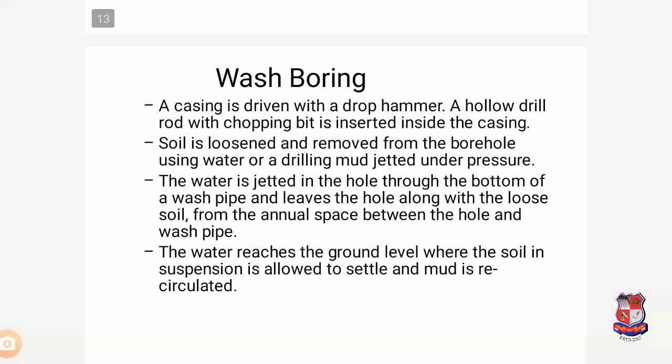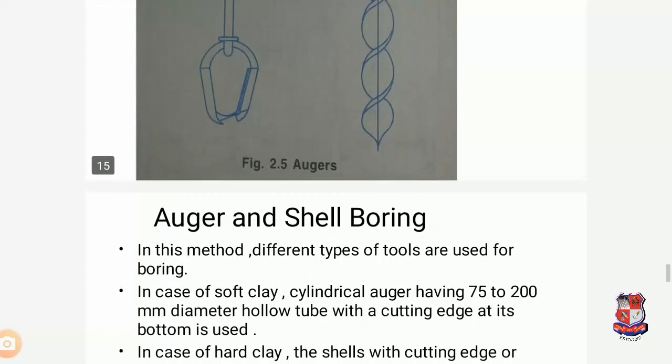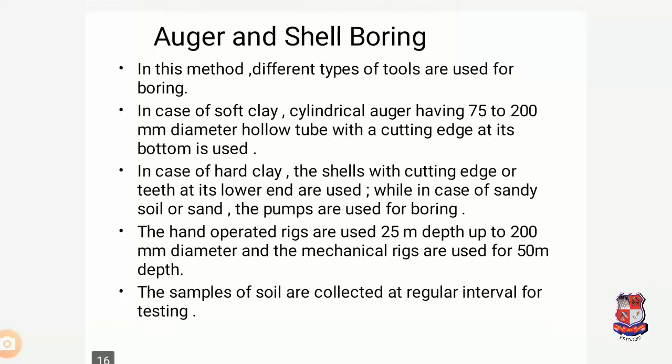In wash boring, a casing is driven with a drop hammer. A hollow drill rod with a chopping bit is inserted inside the casing. The soil is loosened and removed from the borehole using water and drill mud jetted under pressure. Water is jetted into the hole through the bottom of a wash pipe and leaves the hole along with loose soil from the annular space between the hole and the wash pipe. The water reaches ground level where the soil suspension is allowed to settle and mud is recirculated. Due to the water, the soil becomes loose, making the wash boring investigation possible.